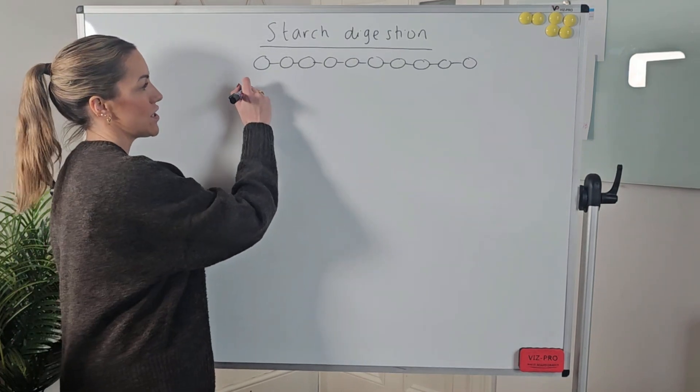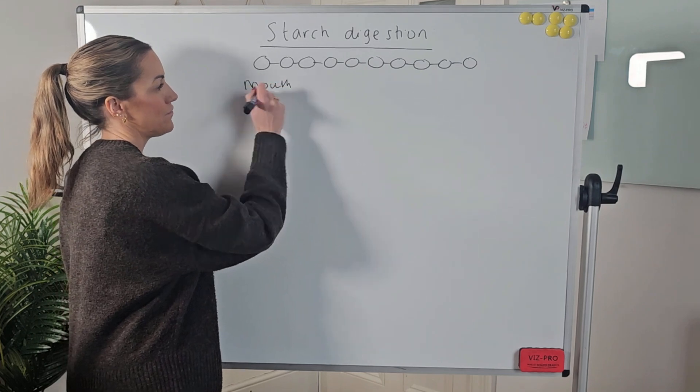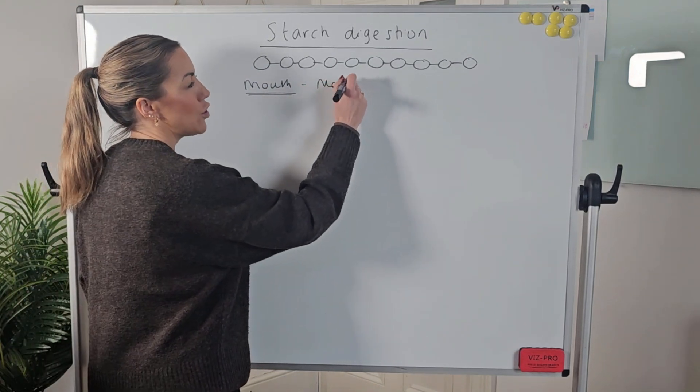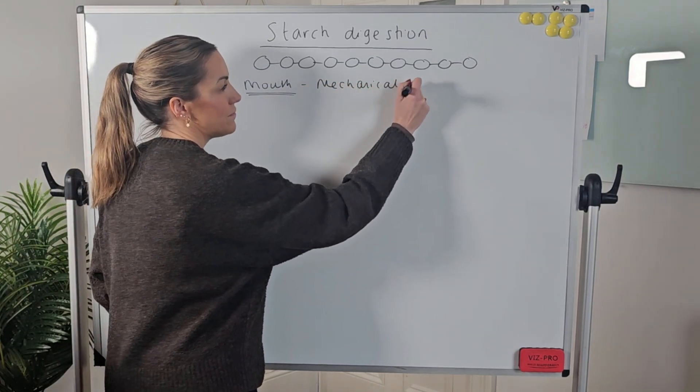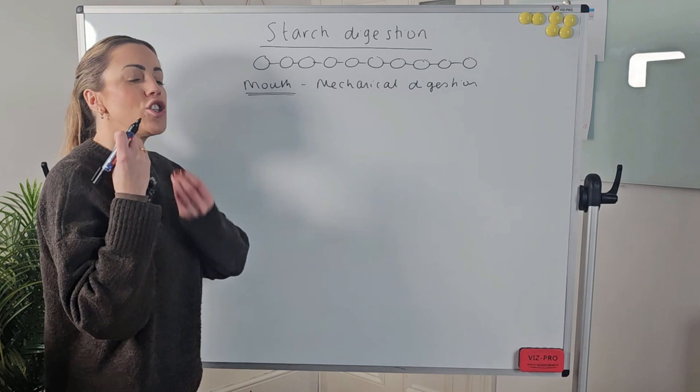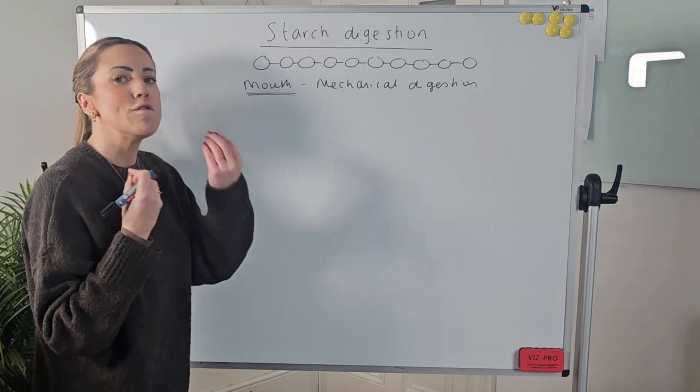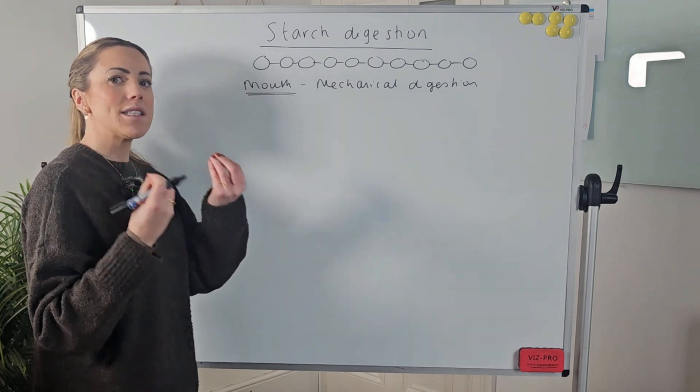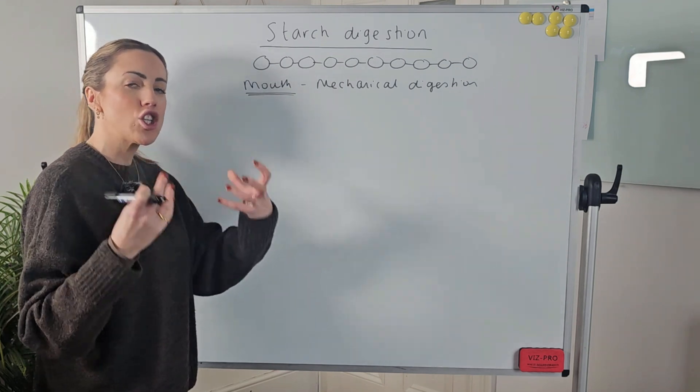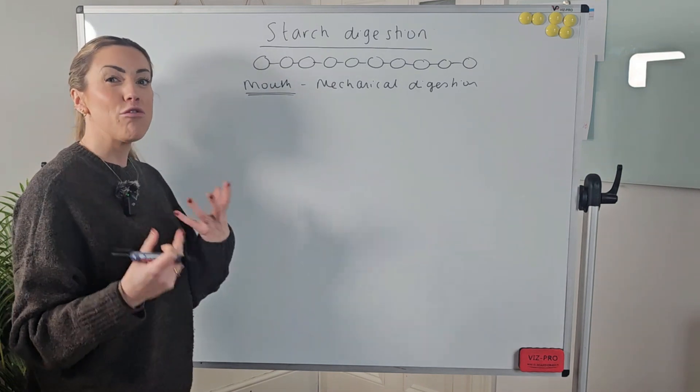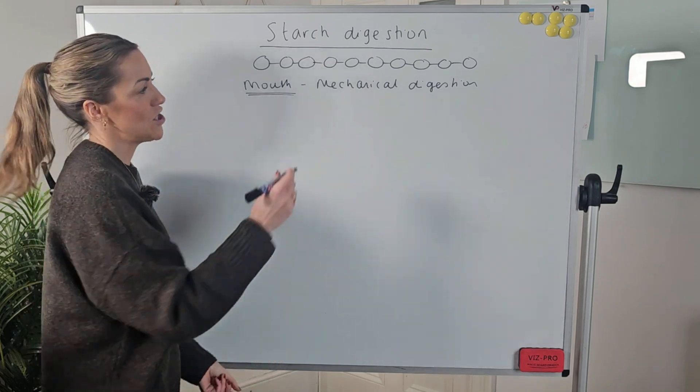Now the digestion of starch starts in the mouth. Obviously in the mouth, we have what we'd call mechanical digestion. So we are chewing our food, we're moving it around, we're mixing it with saliva, and that's going to start to break the large chunks of food into smaller chunks of food.